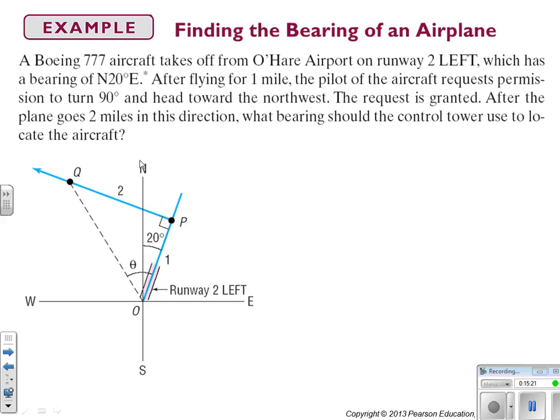So the picture of it looks like this. Runway to left has a bearing of north 20 degrees east. So, north is in this positive y direction, and east is in the positive x direction. So, this guy is 20 degrees. And now he goes two miles in that direction, our new bearing is going to be this theta.